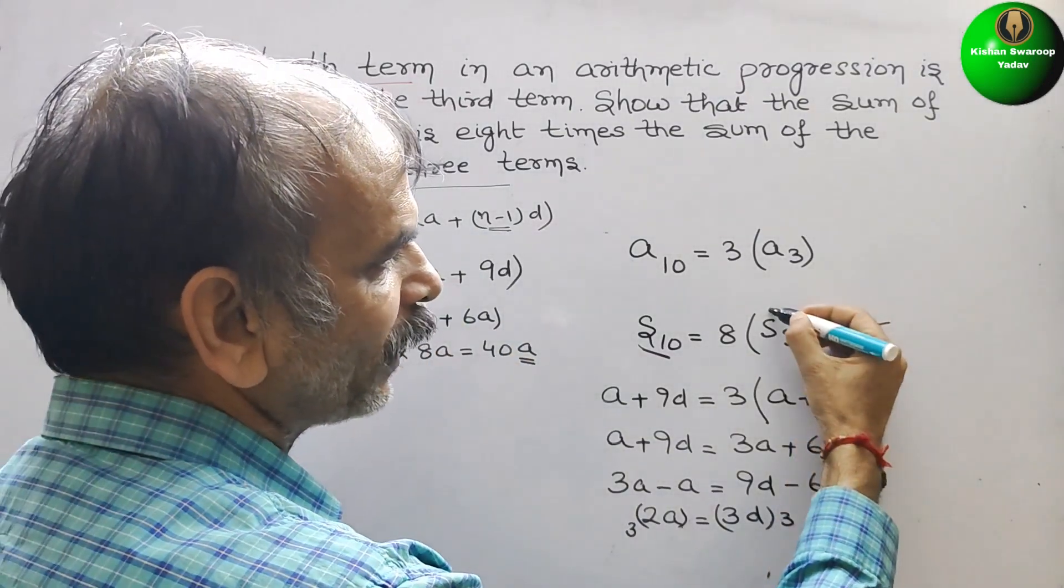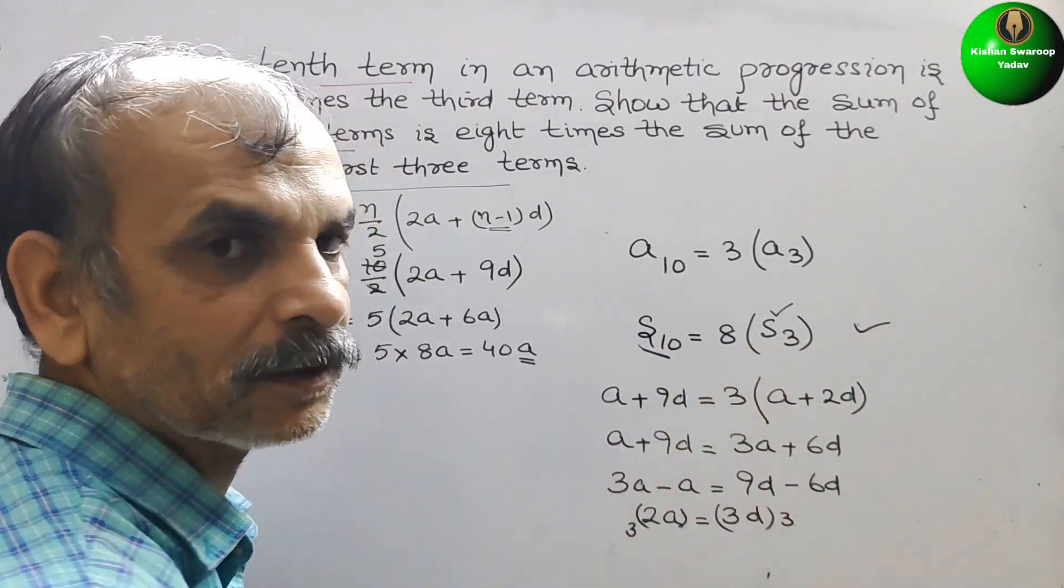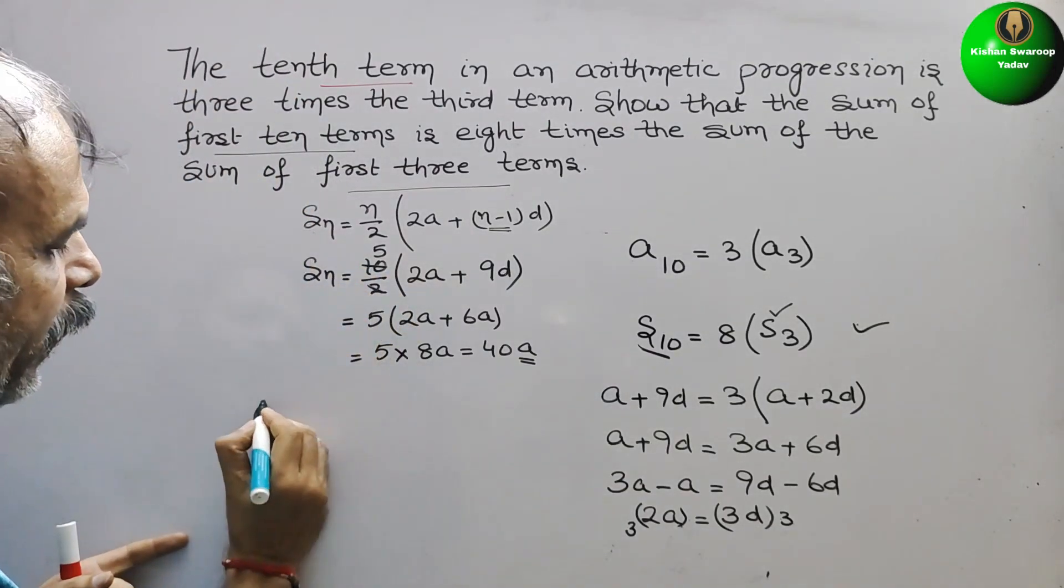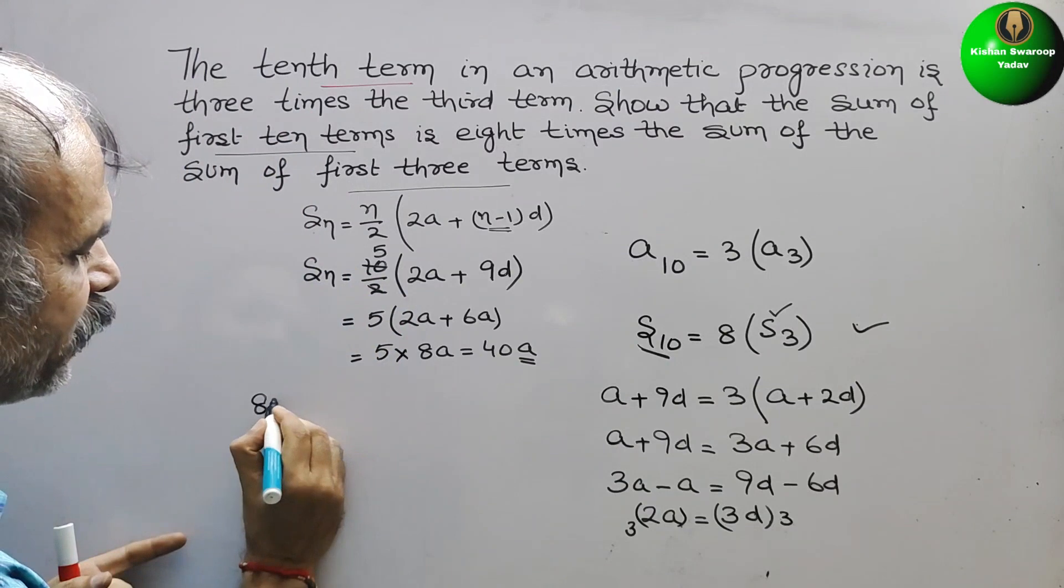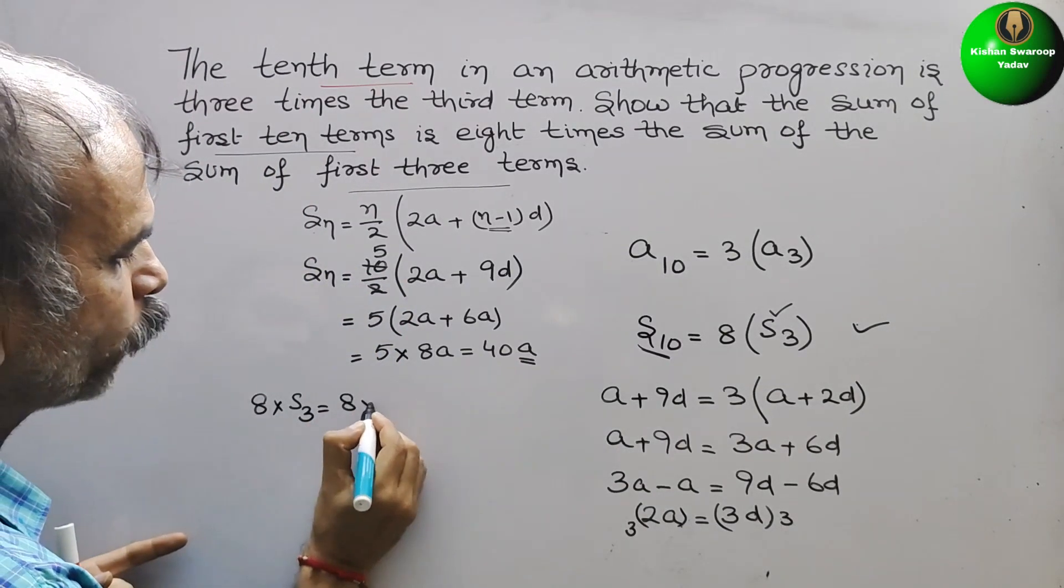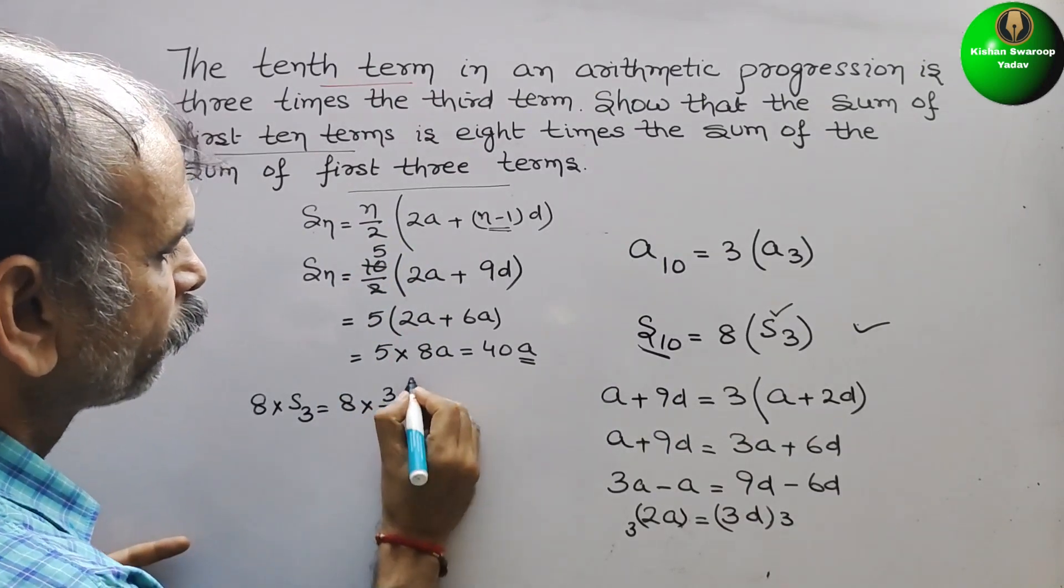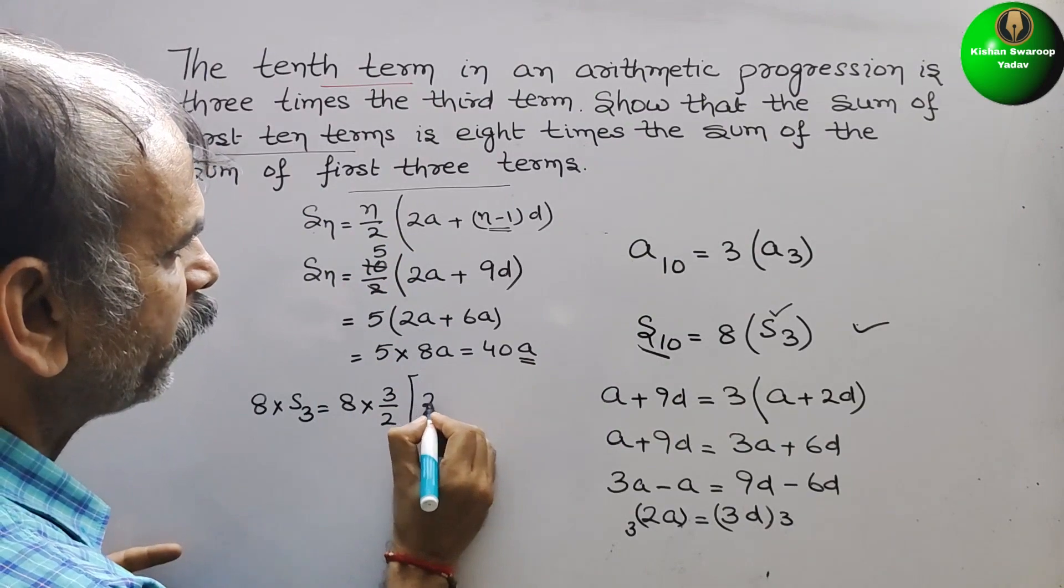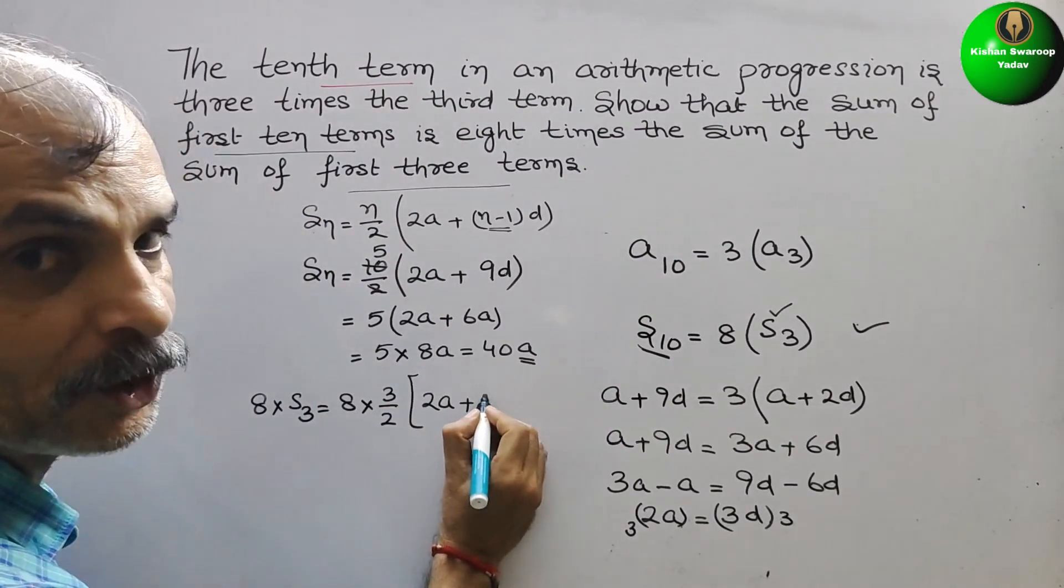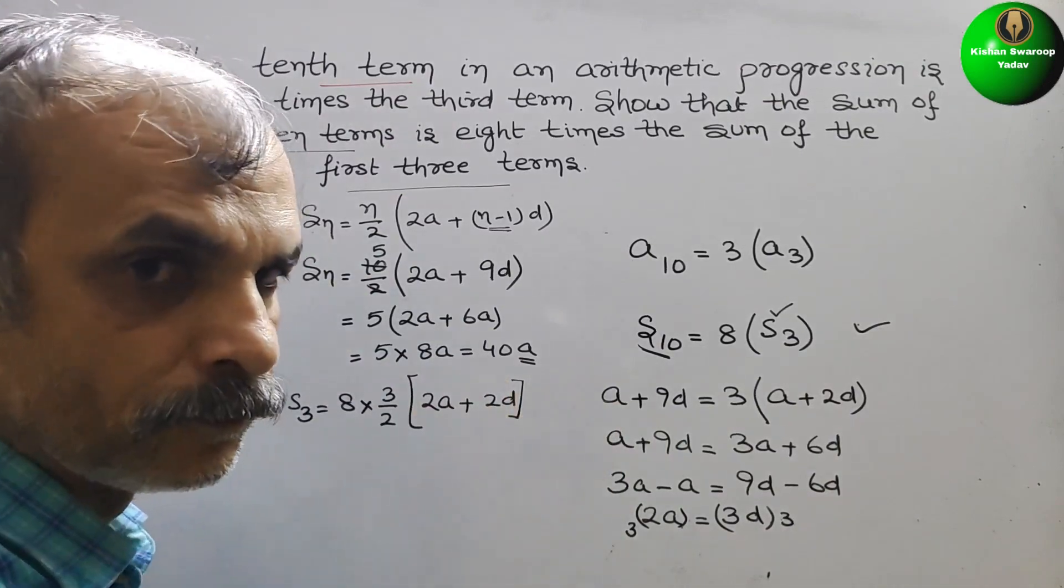Next, we will go for S3 into 8. Why? Because we have to show this. So S3 formula. That means here what we have to write? 8 into S3, that is equal to 8 into n by 2, that means 3 by 2. And here comes 2A plus 3 minus 1 is 2, 2D.